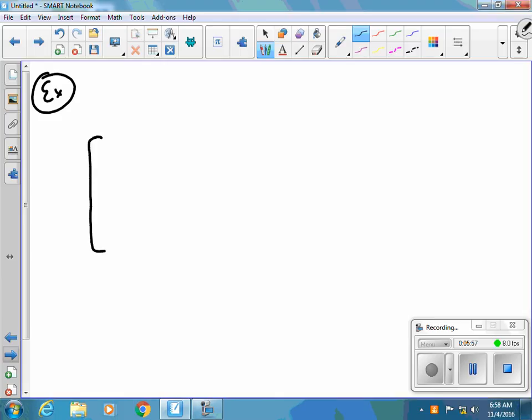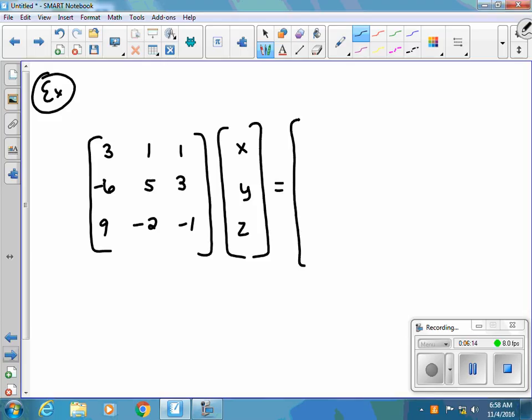So I've got 3, 1, 1 negative 6, 5, 3 9, negative 2 negative 1. I'm going to go x, y, z and that's going to equal negative 1, negative 9 and 5. So when I'm looking at this I might not actually see the system but just to kind of give you what it actually looks like, the first row would really be 3x plus 1y plus 1z equals negative 1.